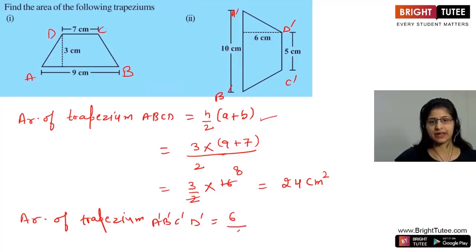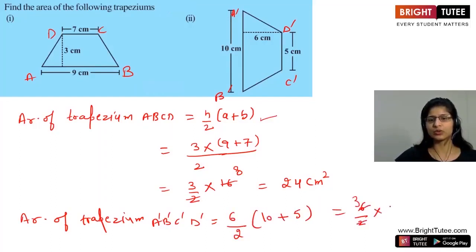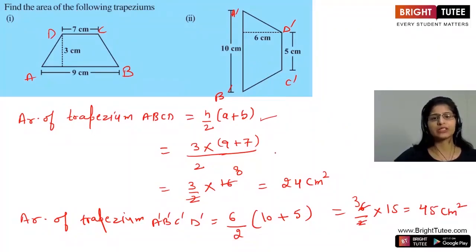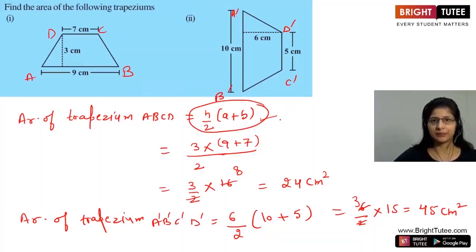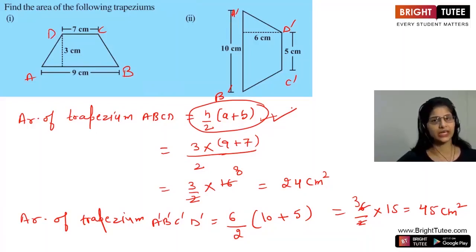Similarly for the next trapezium, area equals H upon 2 into A plus B. The height is 6, divided by 2, into A plus B where A is 10 and B is 5. So 6 upon 2 into 15 equals 3 into 15 = 45 square centimetres. Just by using the same formula we can find the area quickly without dividing into triangles.